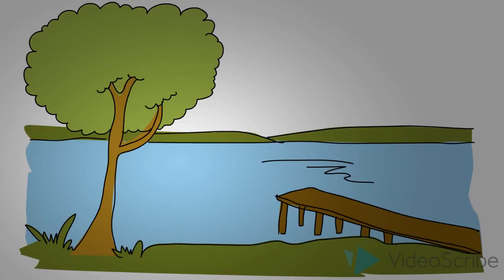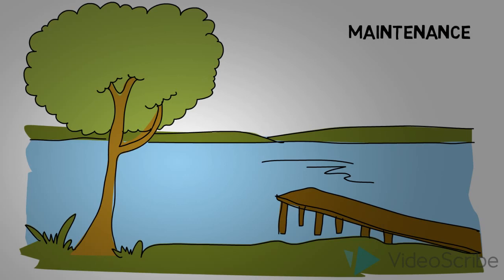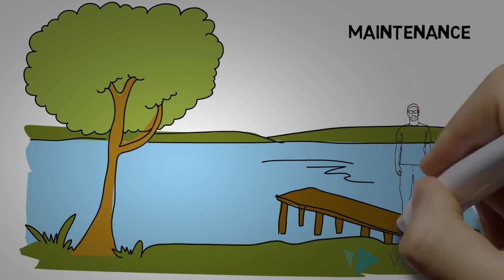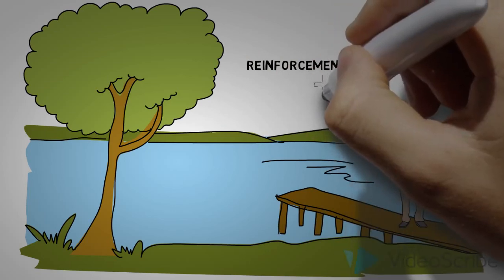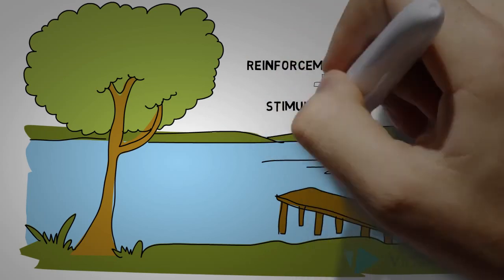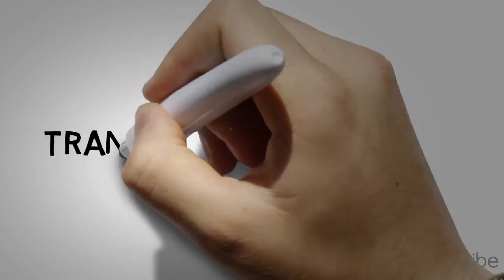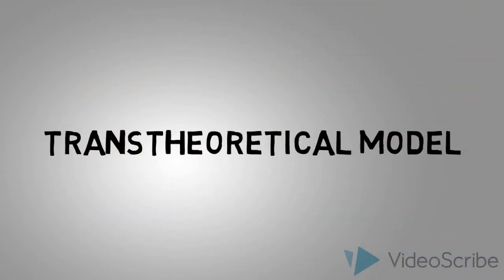Finally, Billy transitions into the maintenance stage where he must continue to use reinforcement management and stimulus control to make the new behavior a lasting change. Stimulus control is using reminders to encourage the healthy behavior. Billy may begin weighing himself every morning to continue to keep in his mind that he is happy with his behavior change and does not want to slip back into his unhealthy habits.